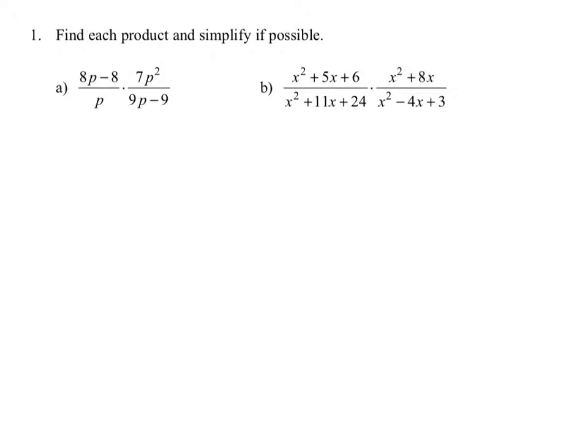For the first example, we're going to find the product of the rational expression 8p minus 8 in the numerator over p in the denominator, times 7p squared in the numerator over 9p minus 9 in the denominator. When you're multiplying fractions, you multiply the numerators and the denominators, and you can divide out any common factors.